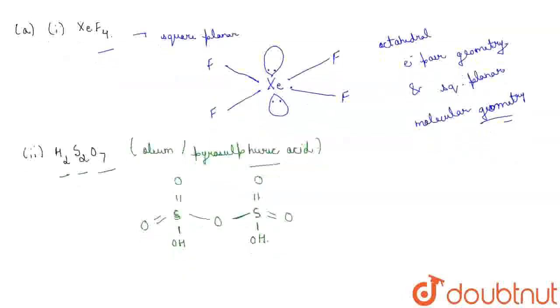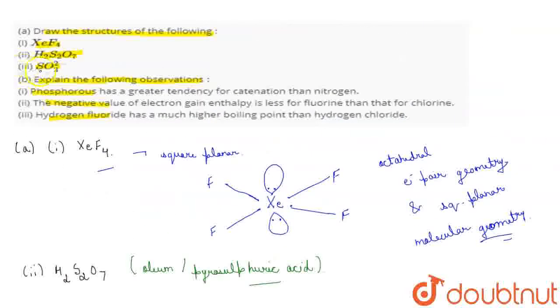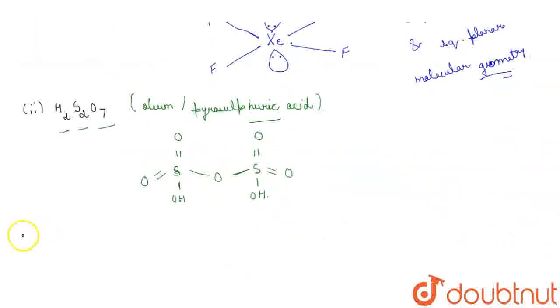Now, moving to the last structure. That is SO3 2 minus. SO3 2 minus. Now, we can also say it like sulfite ion. Right? Now, let's see its structure.